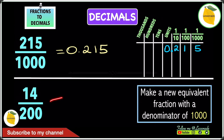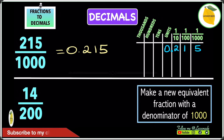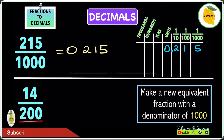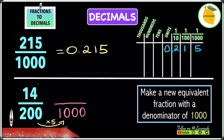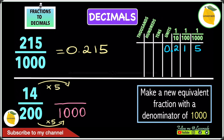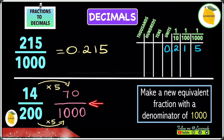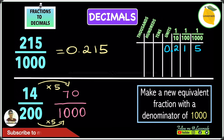For 14 over 200, we need to make an equivalent fraction with a denominator of 1000, because we cannot change it to 10 or 100. To change 200 into 1000 we multiply by 5, since 200 times 5 gives 1000. Whatever you do to the denominator you do to the numerator, so we do 14 times 5, which gives 70. We get 70 over 1000, and 70 over 1000 gives you 0.070.